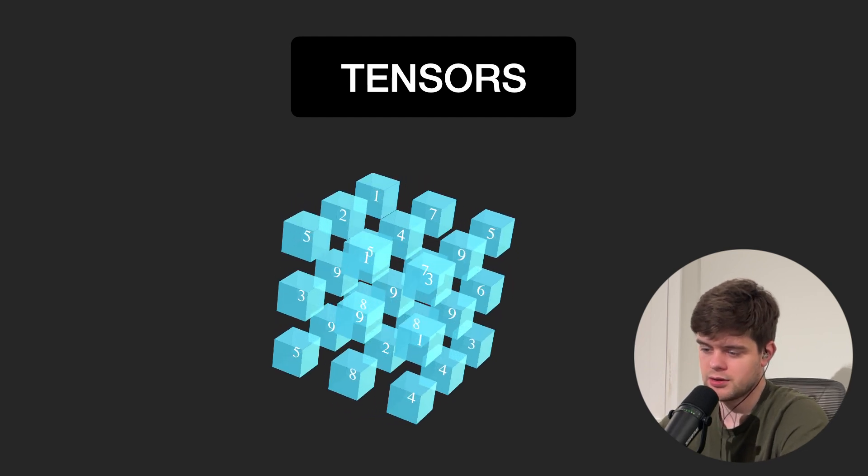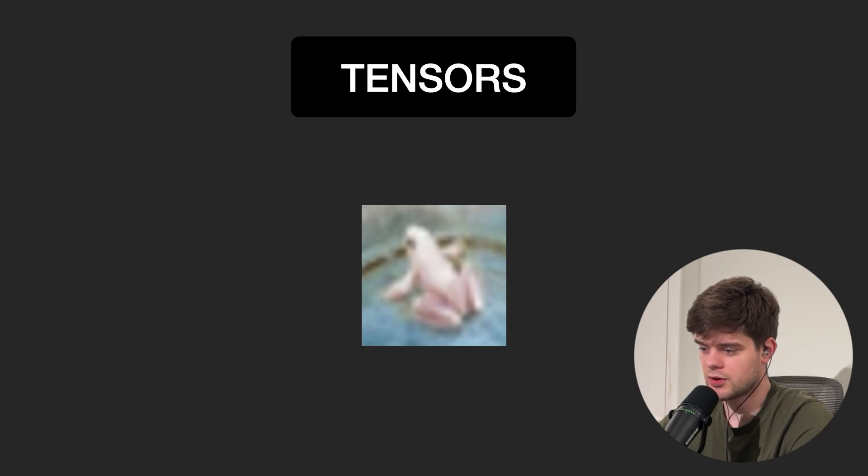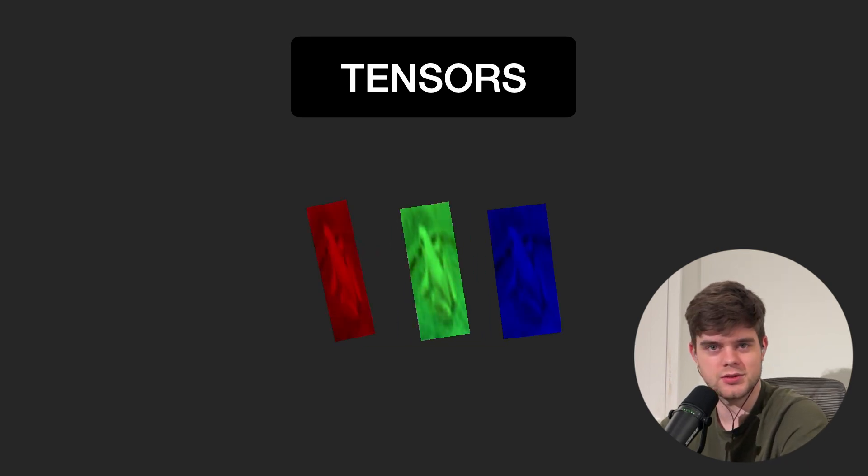Images with colors are three-dimensional tensors, so they're like stacked matrices each representing a color channel. And that's it! In the next video we'll talk about some simple operations we can do with these guys and we'll check some code samples.